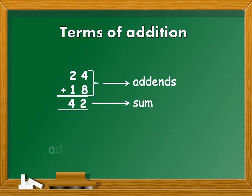So the numbers that are added are called addends. So addend plus addend is equal to the answer which is called sum.